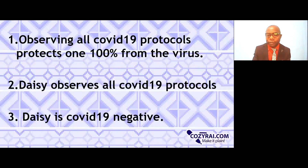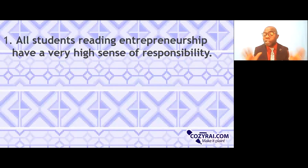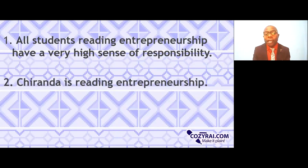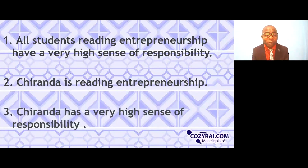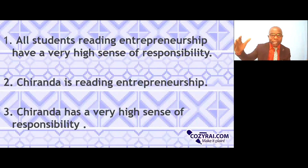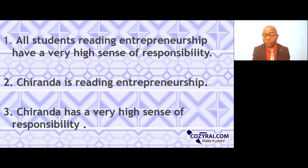Another example — major premise: all students reading entrepreneurship have a very high sense of responsibility. Let's assume this to be absolutely true. Minor premise: Sharanda is reading entrepreneurship. Then the conclusion would be: Sharanda has a very high sense of responsibility. If the truth in the major premise and the truth in the minor premise marry each other, then definitely the conclusion will be absolutely true.